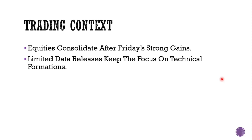Moving on to the European trading hours, we got factory output numbers for Germany for the month of April. Surprisingly, we are seeing that factory orders actually declined there — compared to the prior month's growth of 3.9%, we are seeing a decline of 0.2%. I am expecting this to be a one-off print, and in the next couple of months we are likely to see a continuation of the growth which we have seen over the last couple of months.